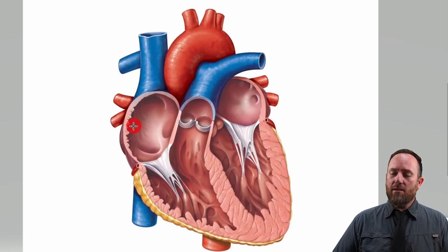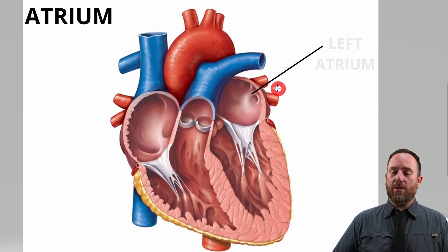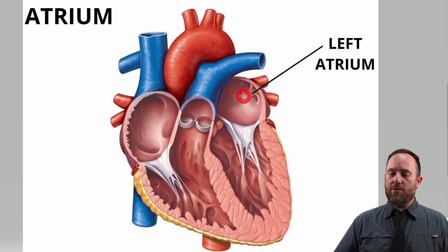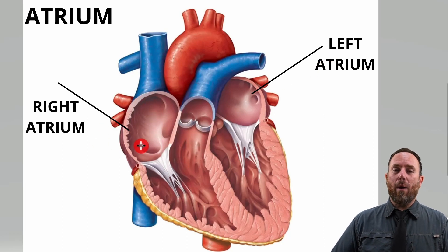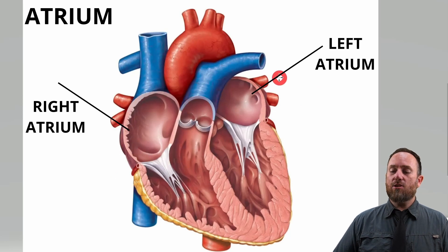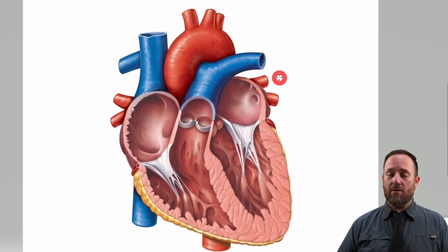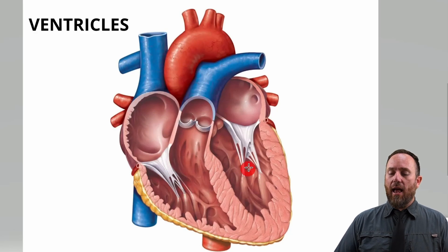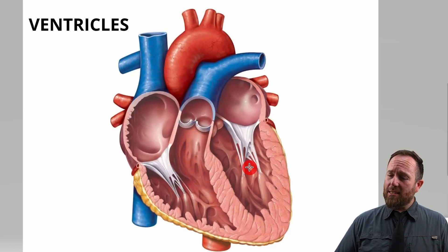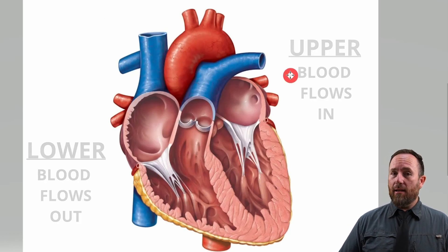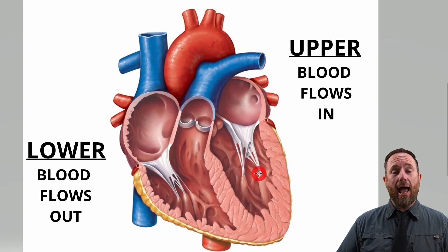The upper section consists of two atriums — a left atrium and a right atrium. An atrium is where the blood flows into the heart. The top section of the heart has to do with blood flowing in. The lower section consists of two ventricles, and the ventricles are responsible for blood leaving the heart. So: top of the heart — in; bottom of the heart — out.